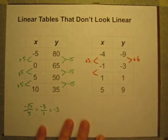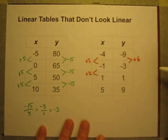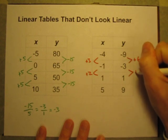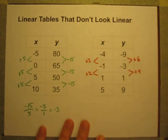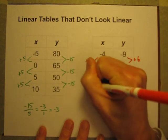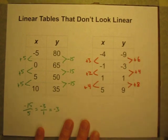Now my X value this time is increasing by 2. Negative 1 plus 2 is 1. And my Y value negative 3 plus 4 gets me to 1. Now my X's are increasing by 4 and my Y's are increasing by 8.